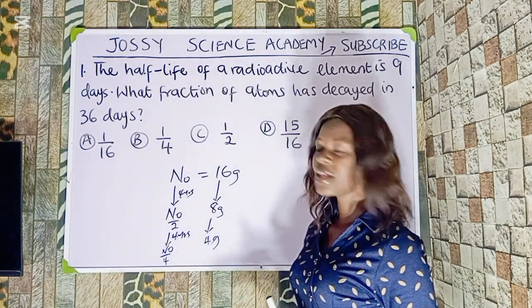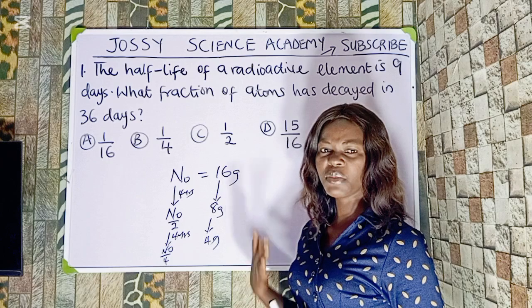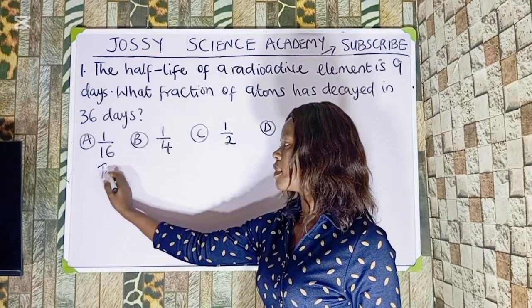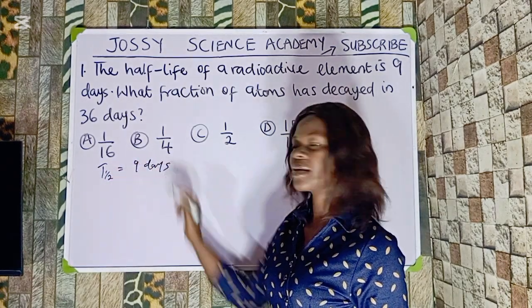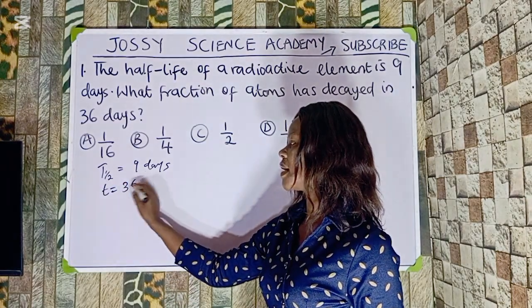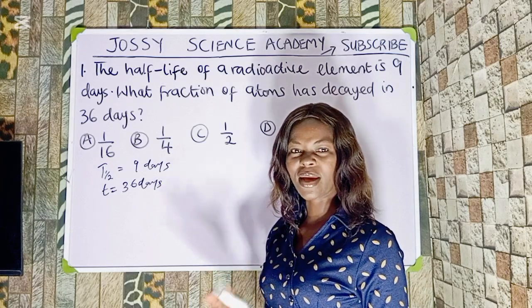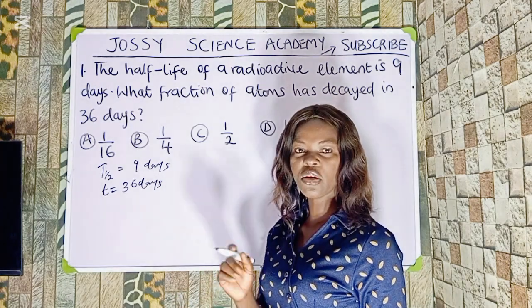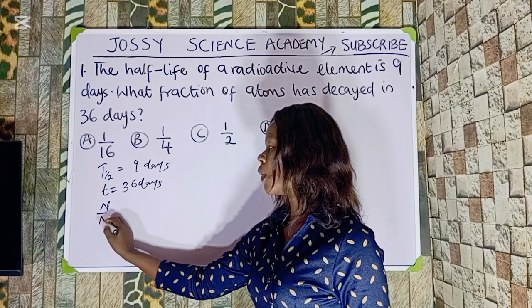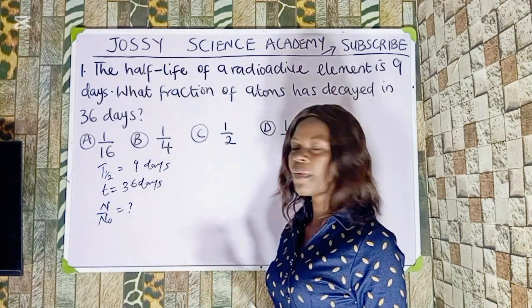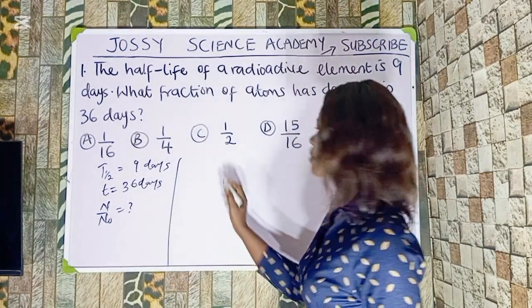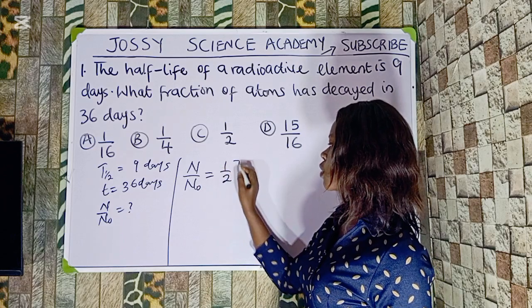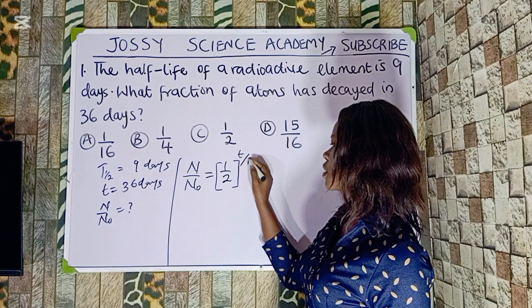From the question, we are asked to calculate the fraction of atoms that have decayed after 36 days. Our half-life, t-half, is given as 9 days, and our time t is given as 36 days. We are looking for the fraction N over N0. The formula we use is: N over N0 equals 1 over 2, raised to the power of t over half-life.